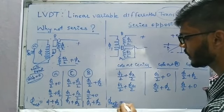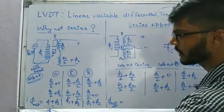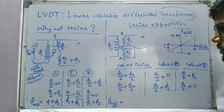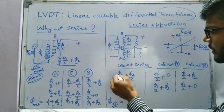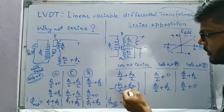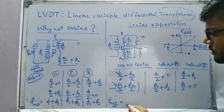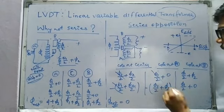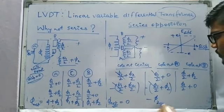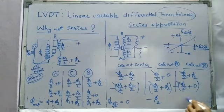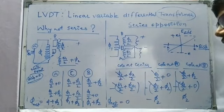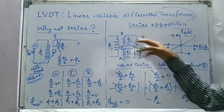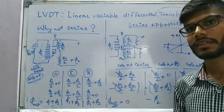In series opposition, φ_net equals the total flux of coil 1 minus total flux of coil 2. At null position C: (φ1/2 + φ2/2) − (φ1/2 + φ2/2) = 0. At extreme A: (φ1/2 + φ2) − (φ1/2) cancels to −φ2. At extreme B: the result cancels to +φ2. So if the core is at center, net flux is zero; at A, it is −φ2; at B, it is +φ2.